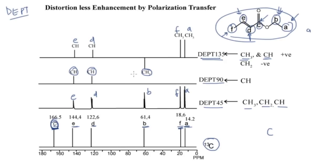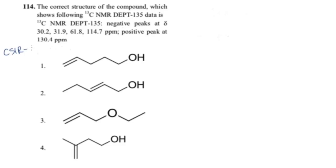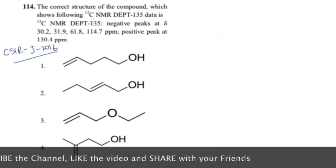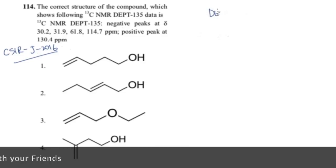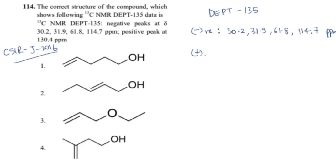Now let's solve a question from the CSIR June 2016 exam. The question asks for the correct structure of a compound that shows the following carbon-13 NMR DEPT 135 data: negative peaks at 30.2, 31.9, 61.8, and 114.7 ppm, and a positive peak at 130.4 ppm.